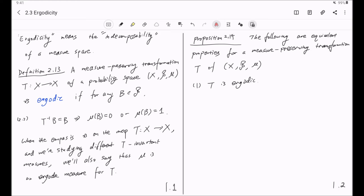And second, we are going to replace this condition with the measure theoretic one. For any B measurable with the measure of T inverse B and B symmetric difference equal to zero, it implies that the measure of B is zero or one.